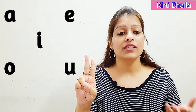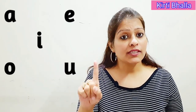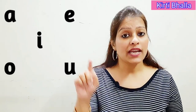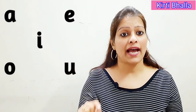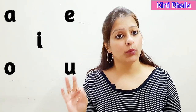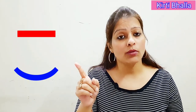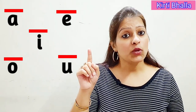Two basic sounds which we usually use in reading. The first sound is the long sound and the second sound is the short sound. Each of the vowels has a long sound and a short sound. There is a sign to tell you which is the long sound and which one is the short sound.